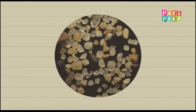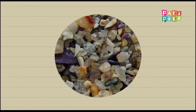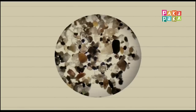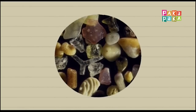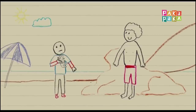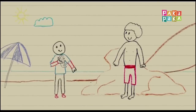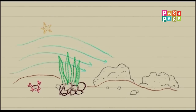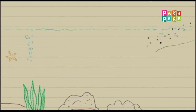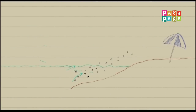Exacto. La arena es un conjunto de partículas muy pequeñas de rocas disgregadas. Es decir, restos de rocas que se vienen erosionando hace millones de años. ¿Por qué acá hay pedacitos de rocas gastadas? El agua va gastando las rocas del fondo del mar y de los ríos. Las mareas son las encargadas de depositarlas en las playas, y el viento las transporta formando dunas y médanos.